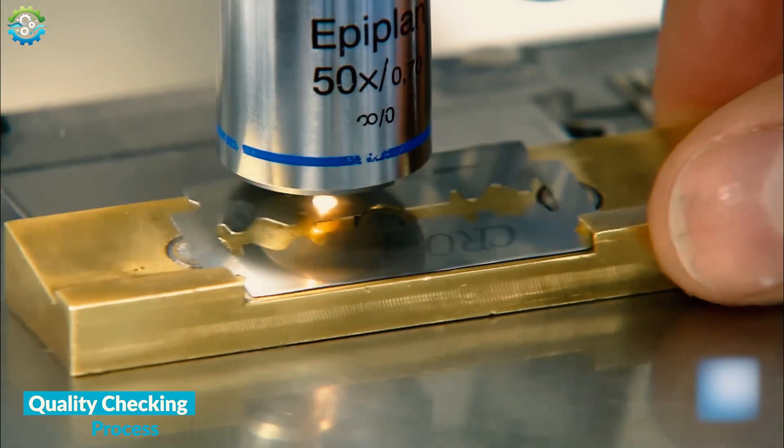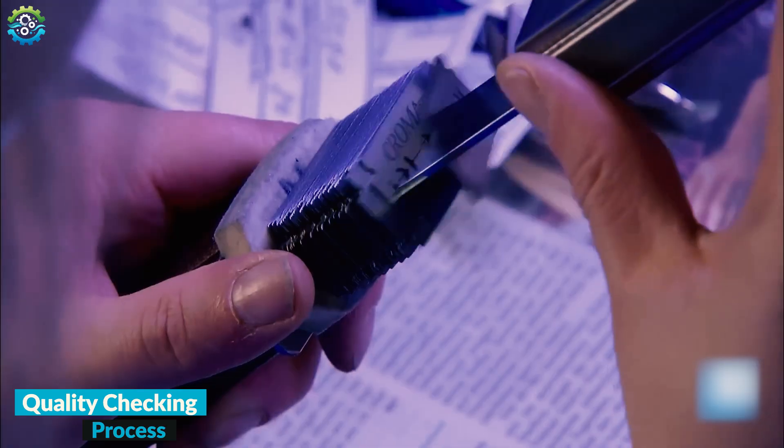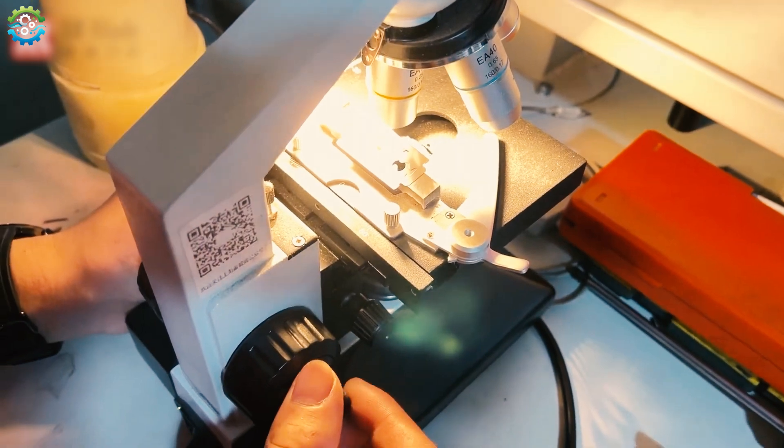The next process is to check the quality of the blades to ensure every blade meets the high-quality standard shape and sharpness. They use powerful microscopes and fluorescent light to explore the tiniest flaws.